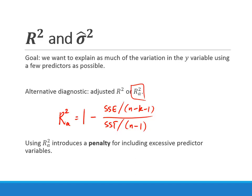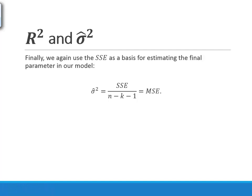We still use the error sum of squares as the basis for estimating the variance parameter sigma squared. Before we divided SSE by n minus 2; now we divide by n minus k minus 1, giving us a mean squared error. This is still the same setup — just a more general form.